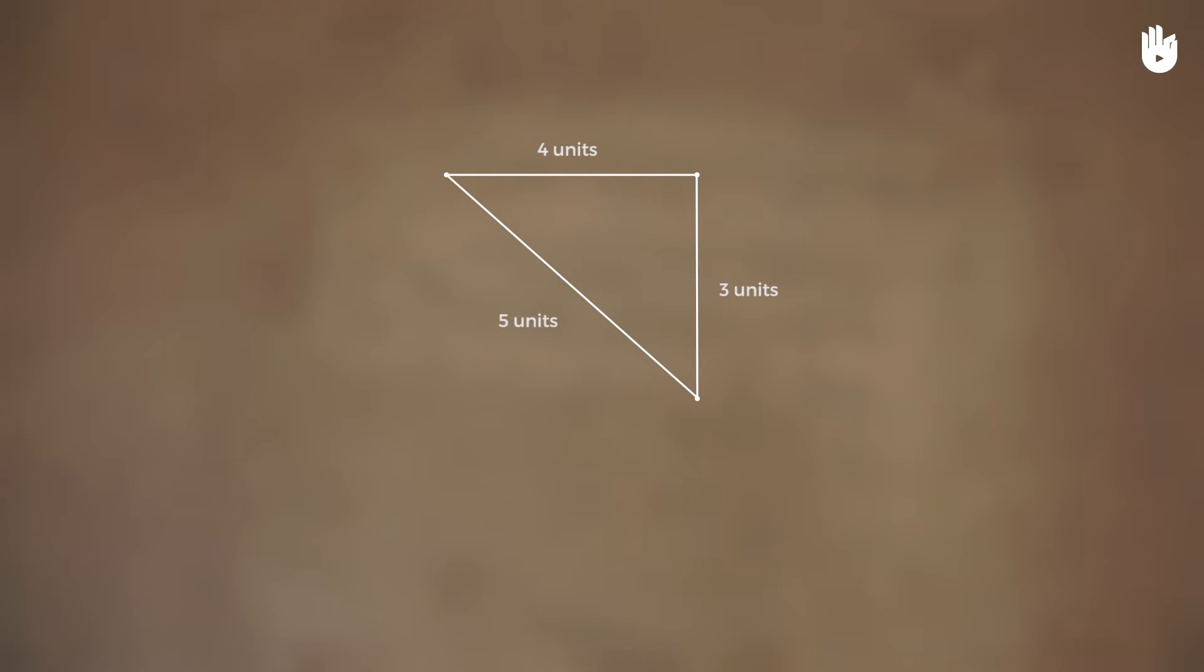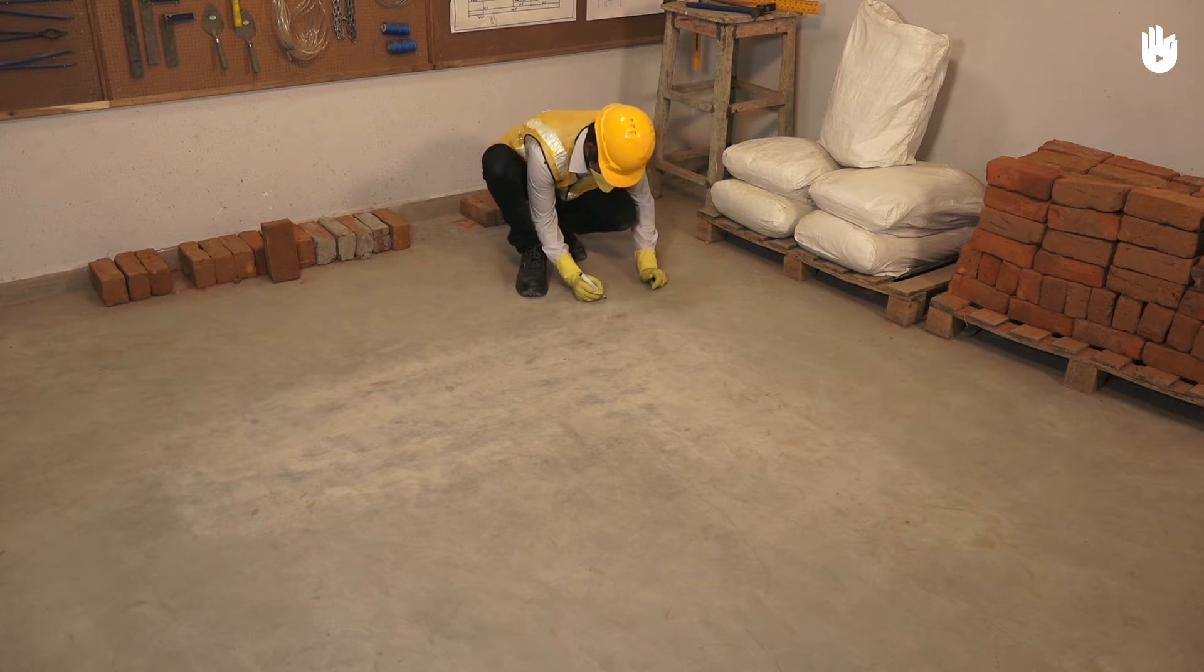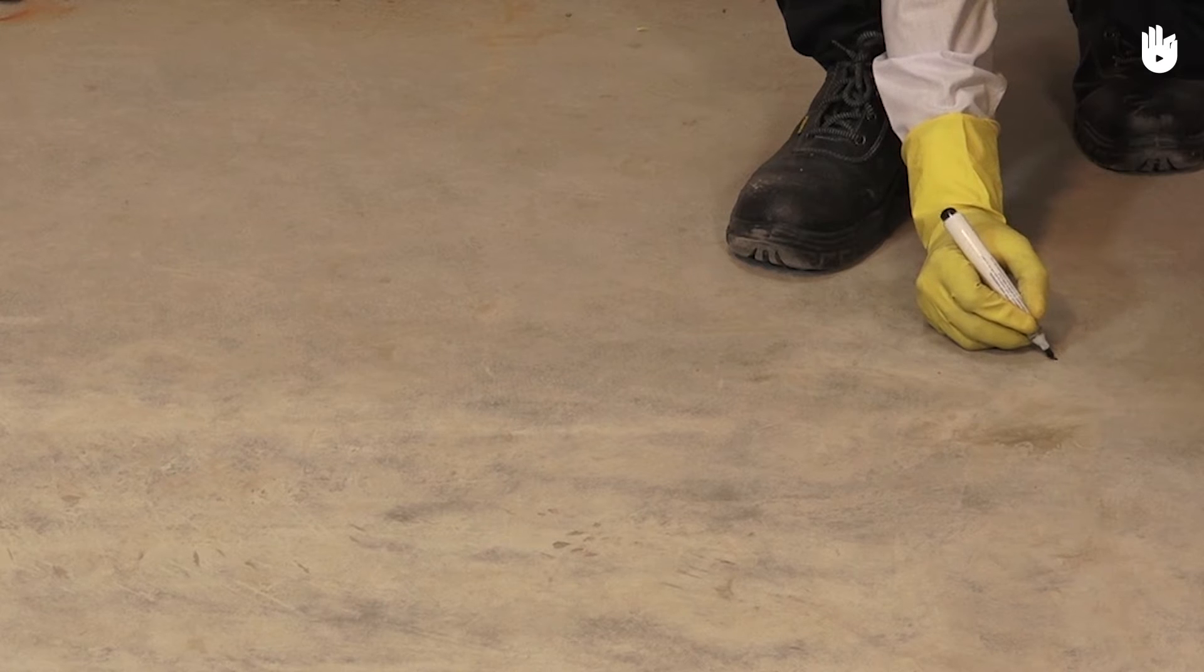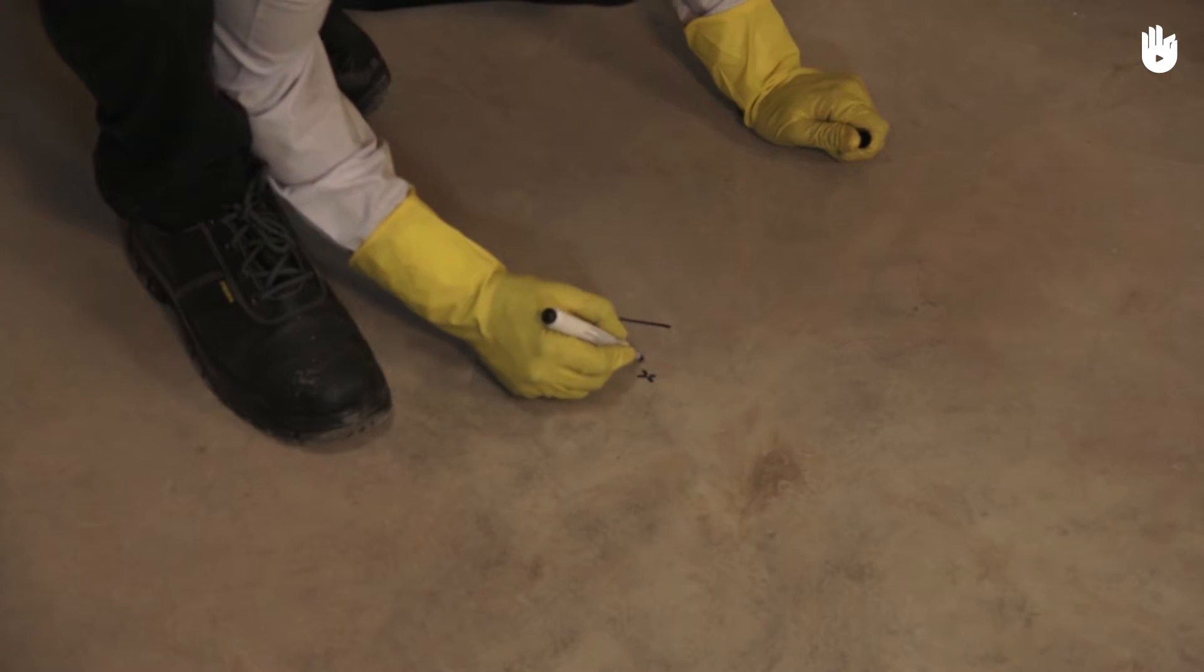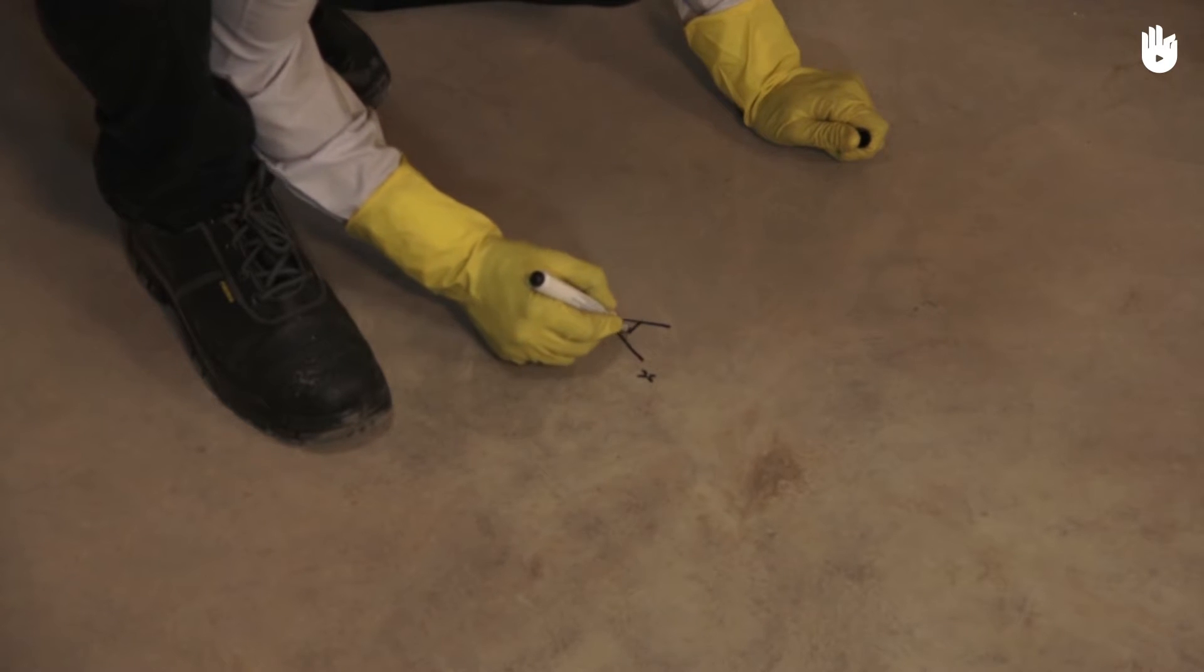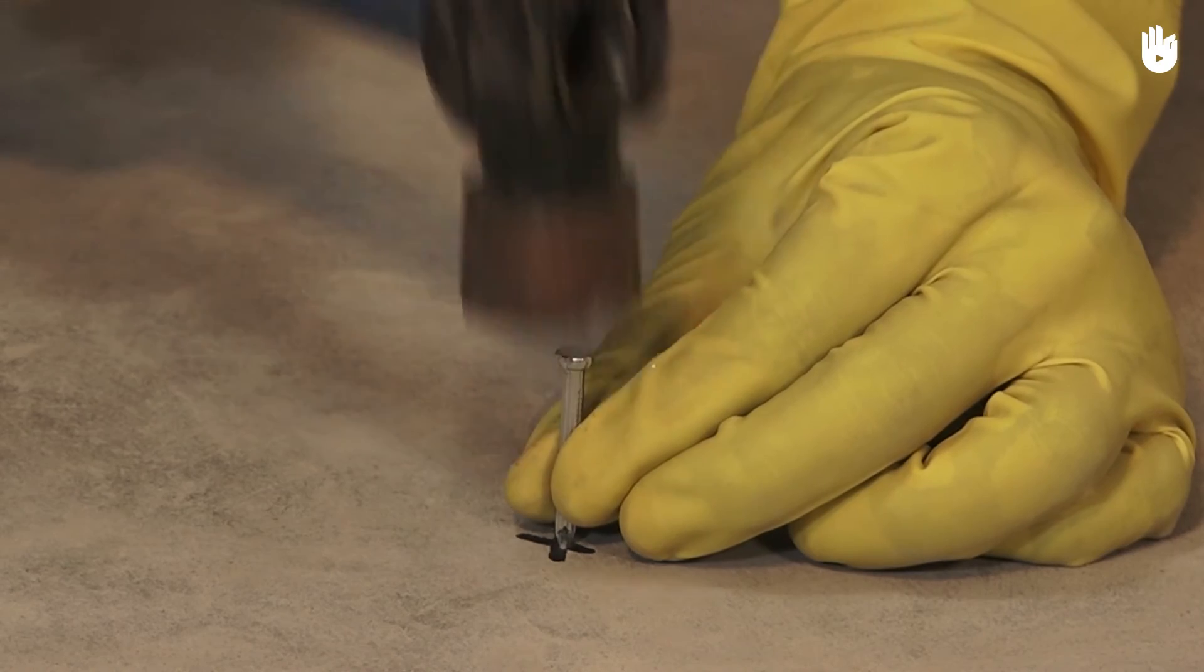then the third side will always measure 5 units. Locate the spot where the two walls will meet and mark point A. Hammer the first nail into this point.